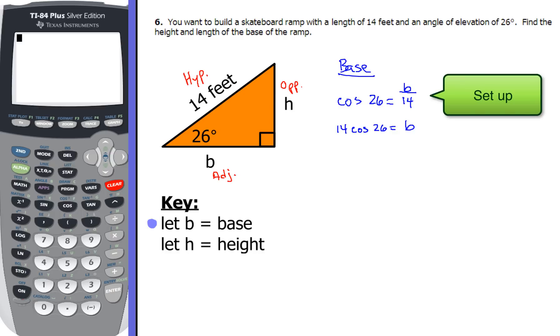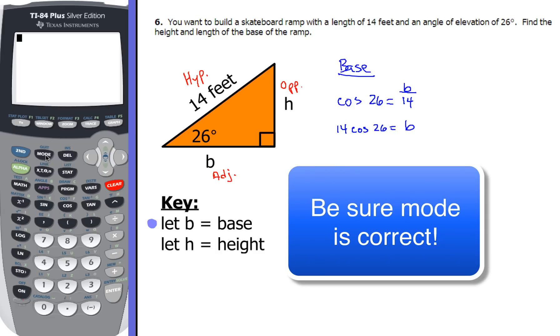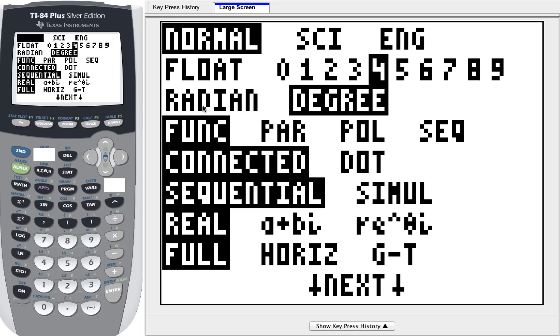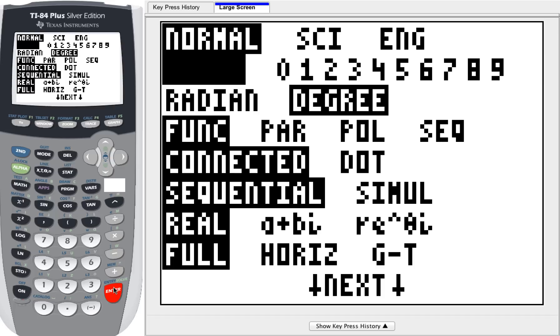So to find the length of the base, what we're going to do is set up the trig ratio: cosine of 26 equals b over 14. Cross multiplying both sides by 14, I get 14 cosine 26 equals b. Now before we go put it in our calculator, let's just double check if our mode is good and everything. So I want you to hit the mode button and make sure your mode says degree. Now the next thing I want you to do is go ahead down and float. So I want your calculator to be set up just like mine.